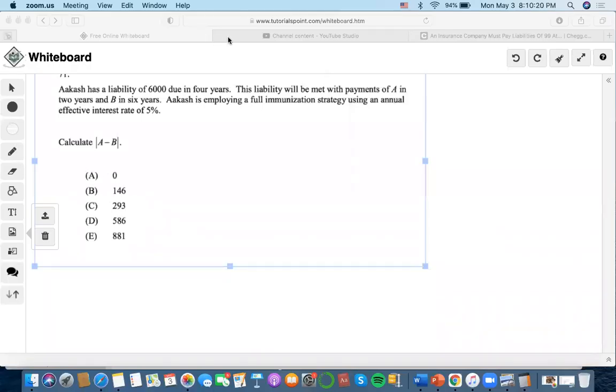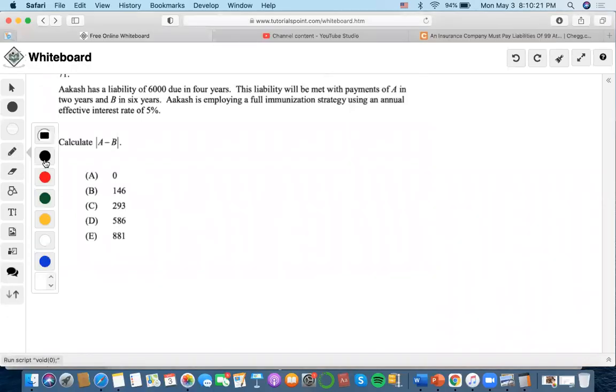Okay, so this problem says Adcash has a liability of $6,000 due in four years, right?